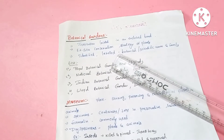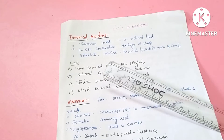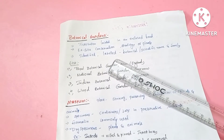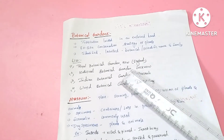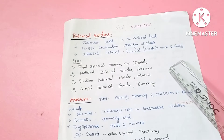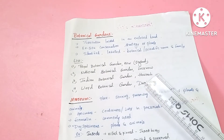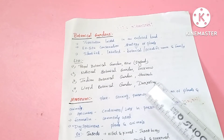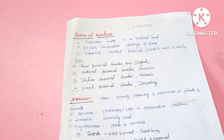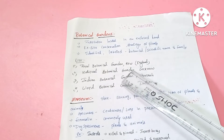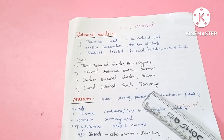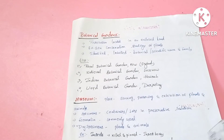In botanical gardens, we protect plants. We identify plants and label them. The labels include local name, scientific name, botanical name, and family. Examples of botanical gardens include the National Botanical Garden in Lucknow, the Indian Botanical Garden in Howrah, and the Lloyd Botanical Garden in Darjeeling.